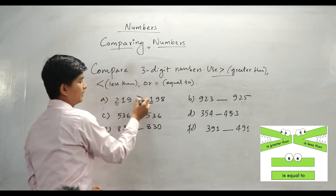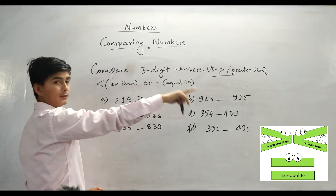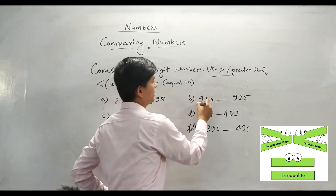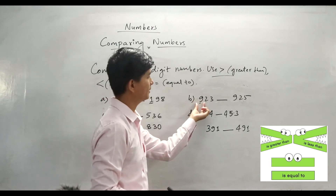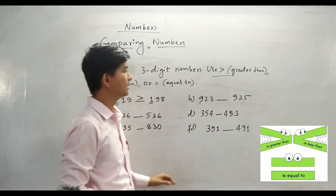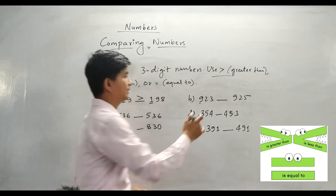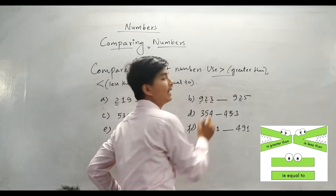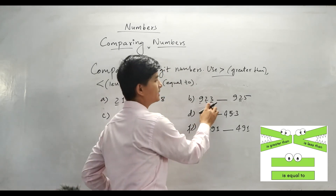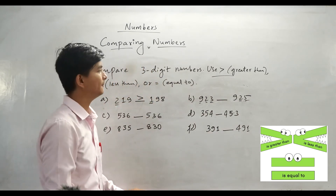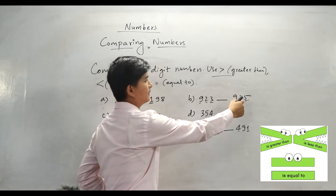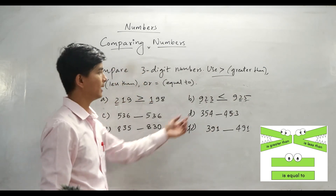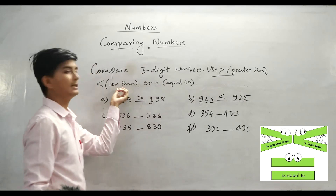Now let's solve more examples. For 923 versus 925: compare hundreds place — 9 and 9, same. Tens place — 2 and 2, same. Ones place — 3 and 5. Five is greater, which means 923 is less than 925. We put the less than symbol because 3 is less than 5.